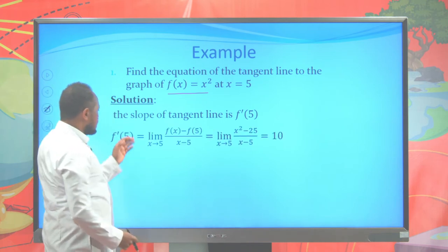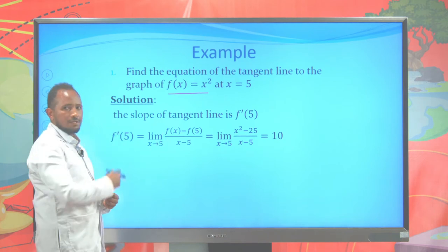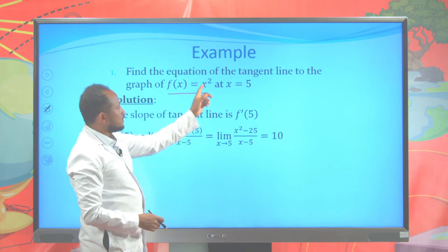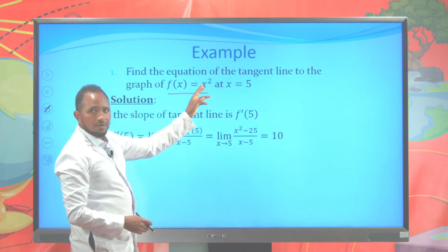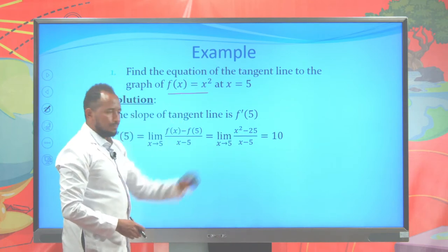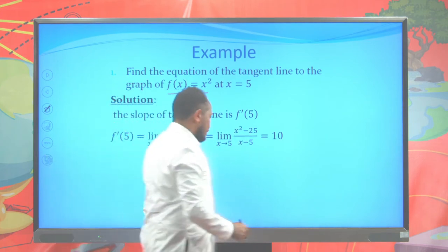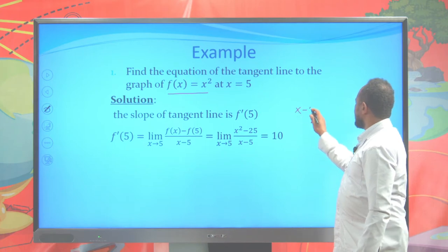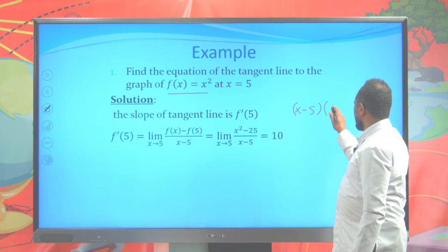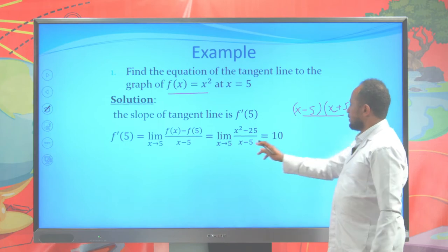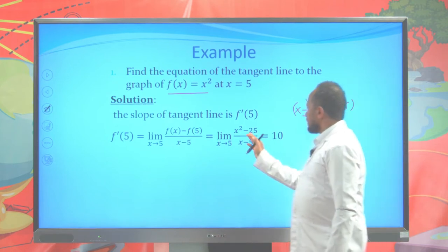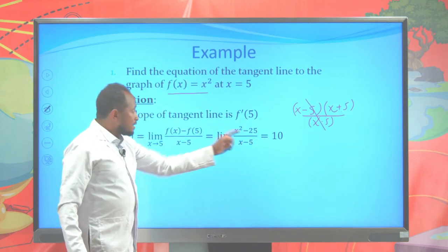To find the derivative, use this formula. The derivative of the function at 5 is the limit of f of x minus f of 5 over x minus 5, where x approaches 5. f of x is x squared, f of 5 is 25, so we get x squared minus 25 over x minus 5. Factorizing: x squared minus 25 equals x minus 5 times x plus 5, divided by x minus 5. These cancel, leaving x plus 5. The limit as x approaches 5 is 5 plus 5, which is 10. This 10 is the slope of the tangent line.